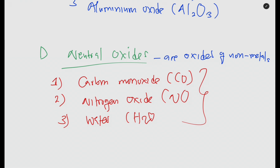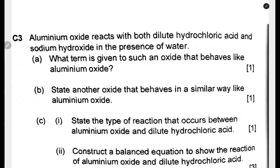Now let us look at an exam question. The question reads: aluminium oxide reacts with both dilute hydrochloric acid and sodium hydroxide. Hydrochloric acid is an acid and sodium hydroxide is a base. What term is given to such an oxide? The term given is amphoteric oxide, because it shows both acidic and basic properties.